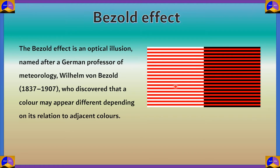So this is an optical illusion where a color, when placed in two different contexts, may appear different. For example, red appears different to us because of the adjacent color around it. When red is surrounded by white it looks different from red surrounded by black — even though they are exactly the same.